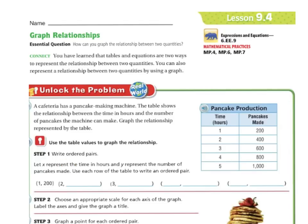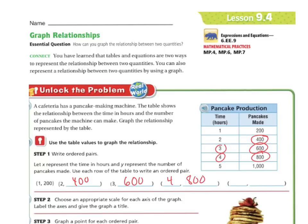So let's write the ordered pairs. Let X represent the time in hours, and Y is going to represent the number of pancakes made. Use each row in the table to write the ordered pair. Number 1 was 200, 2 was 400, 3 is 600, 4 and 800, and then 5 and 1,000.